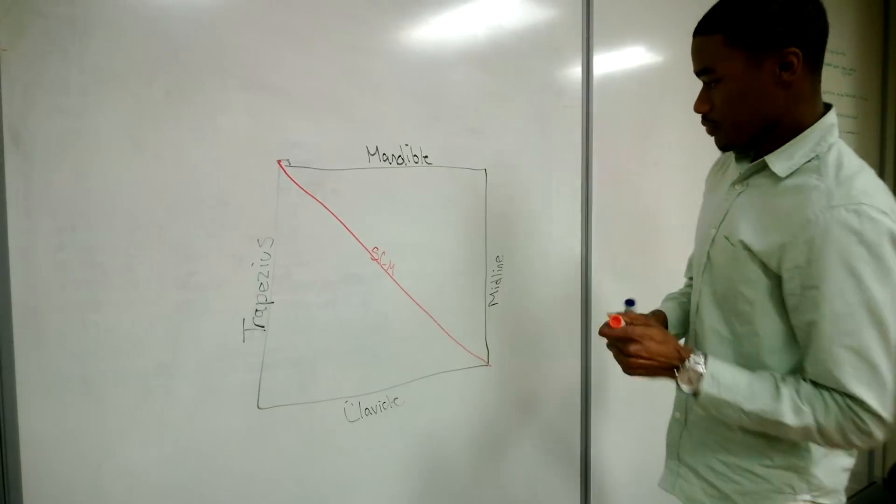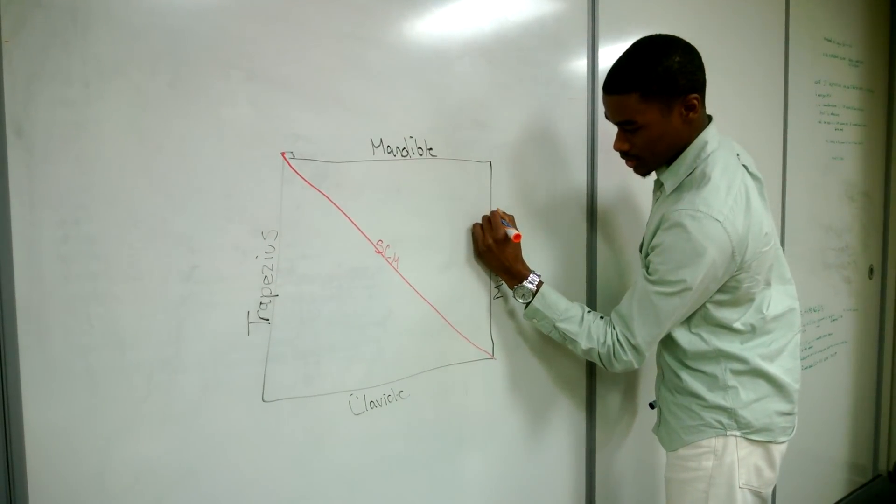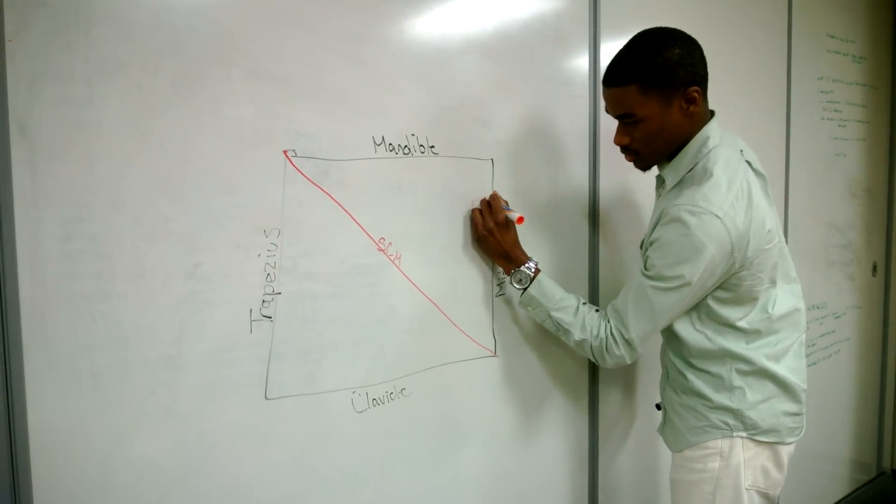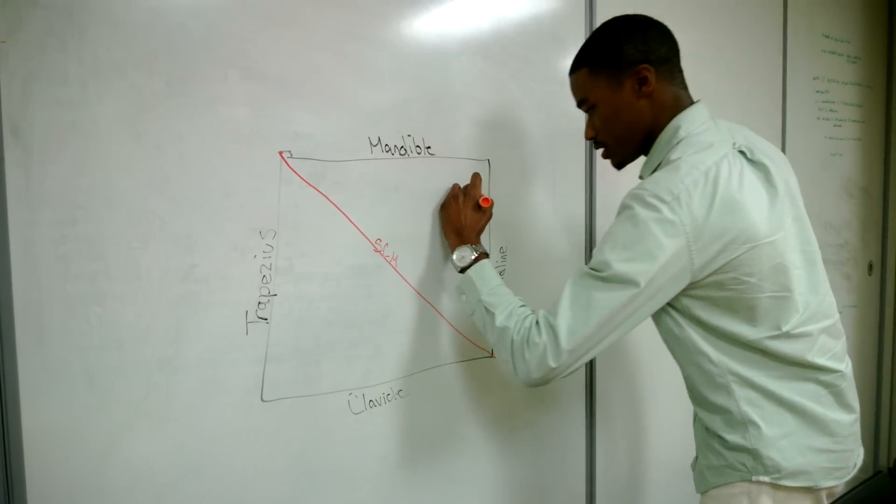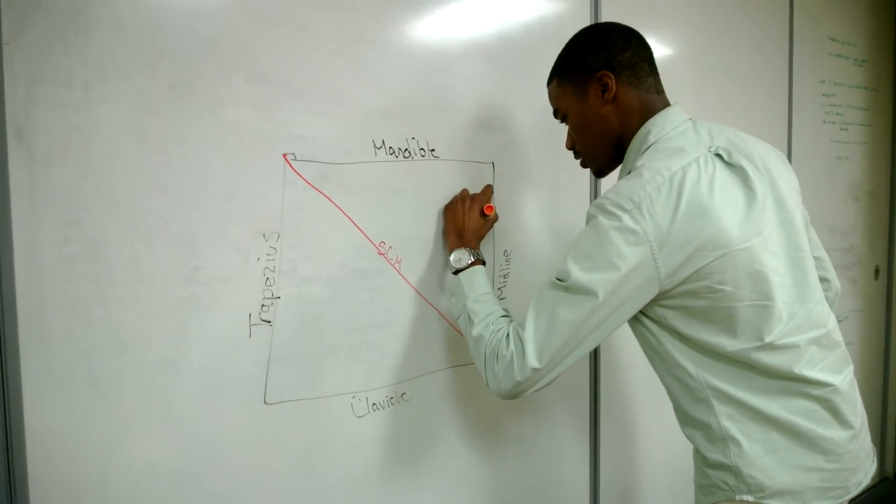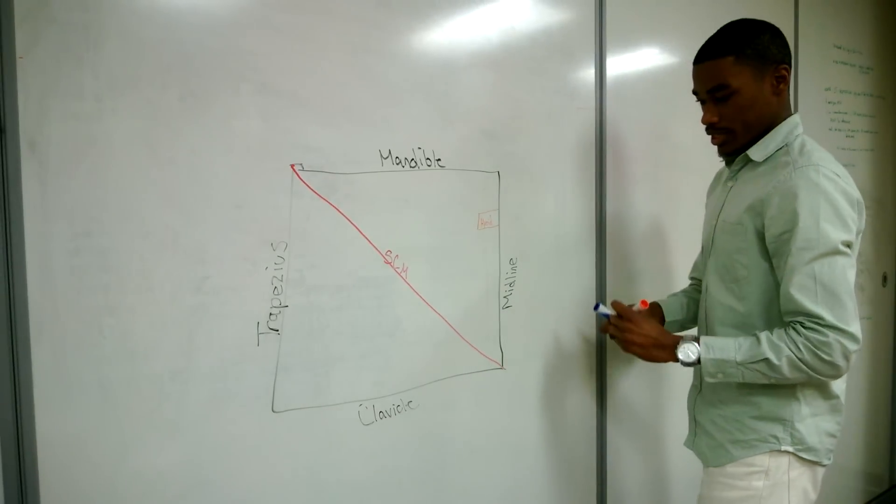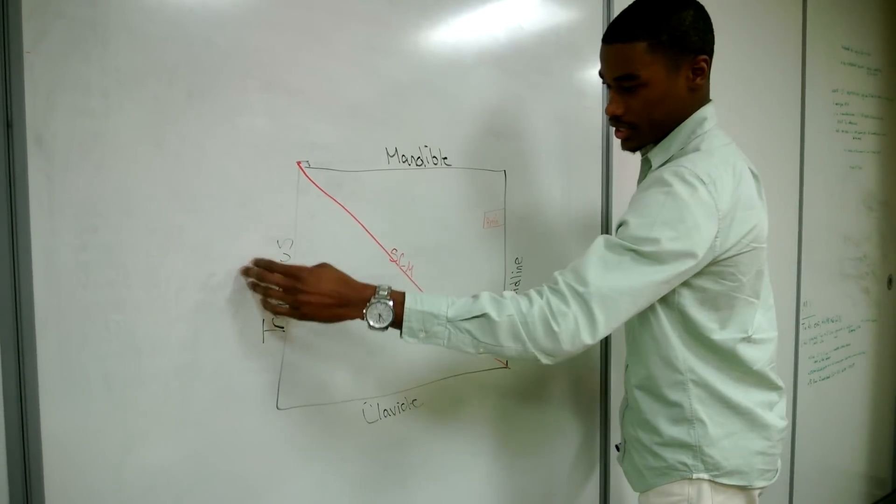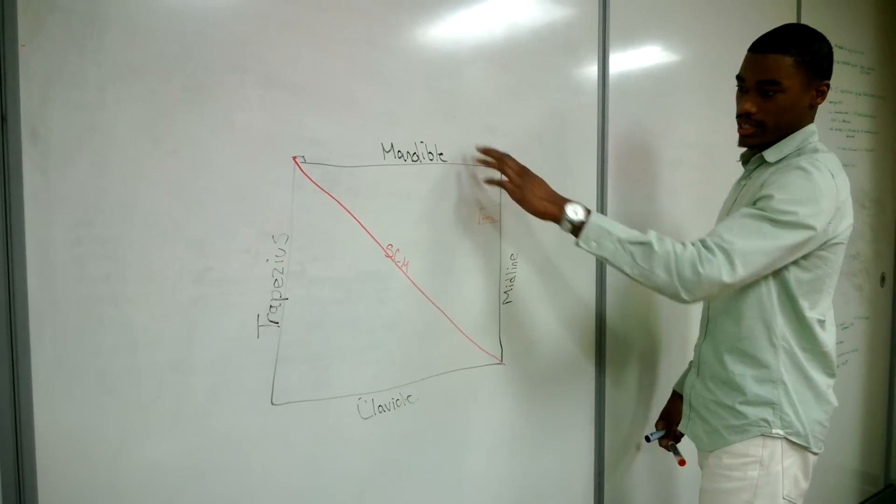Next we're going to draw our hyoid bone. This is our hyoid bone. Remember again, this is anterior, this is posterior, trapezius, clavicle, midline, mandible.